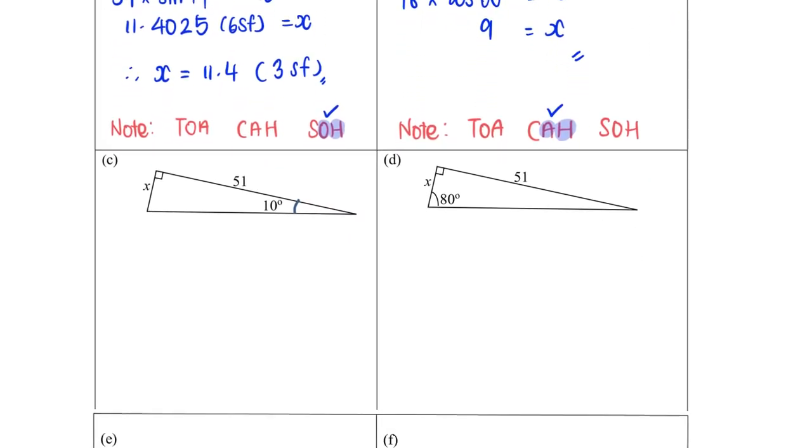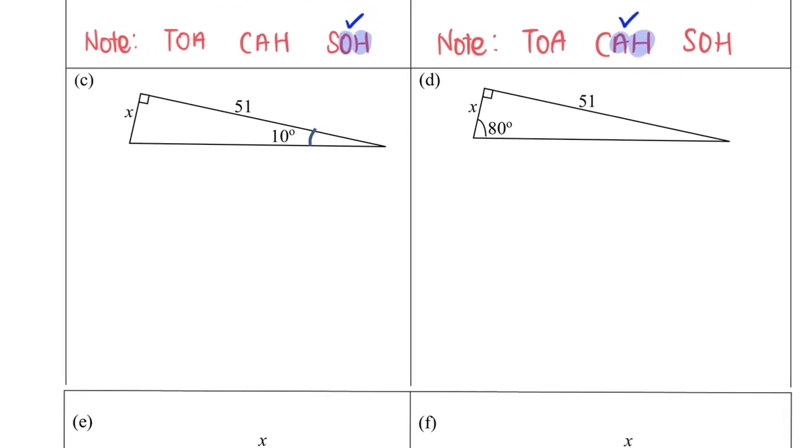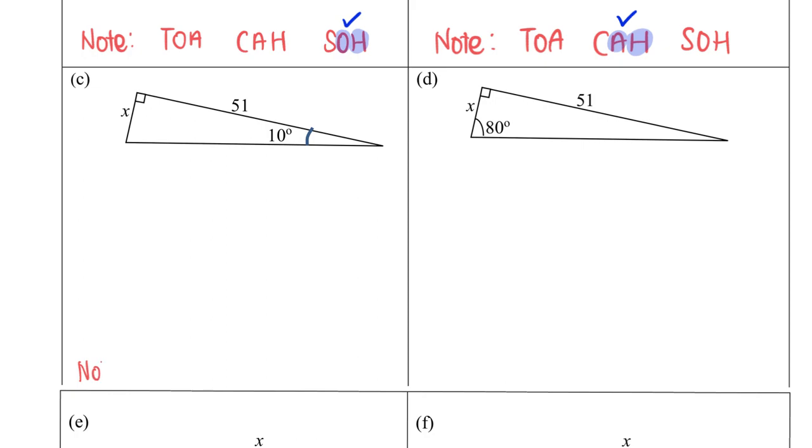So as I continue to work on four more examples, do observe what is consistent among the approaches. For example, Mr. Tan always starts off with writing TOA CAH SOH at one side. Step one is to look at the angle we are talking about or we are using, in this case 10 degrees, and I'm going to identify the sides.